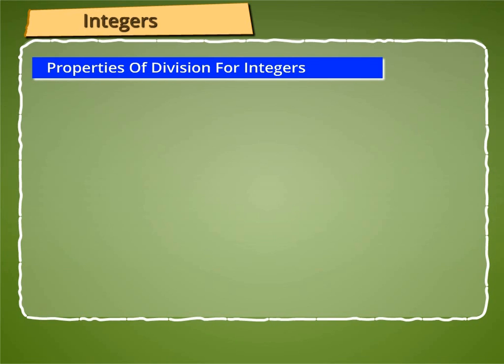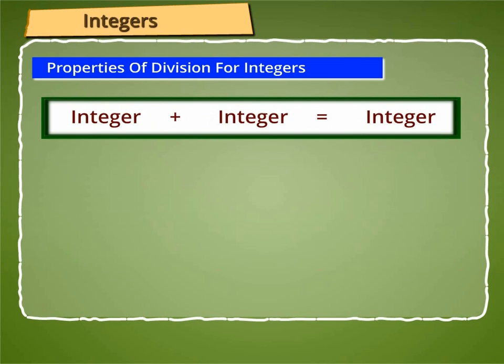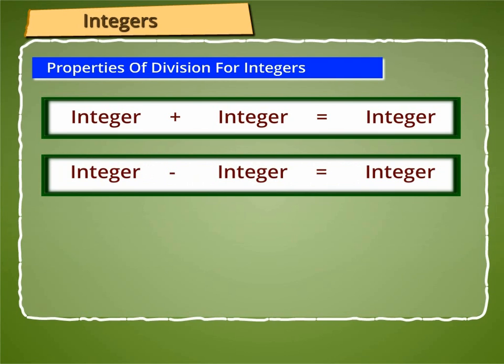Let us now learn about some of the properties of division for integers. We have seen earlier that if any two integers are added, the result is an integer. If one integer is subtracted from any other integer, the result is again an integer.